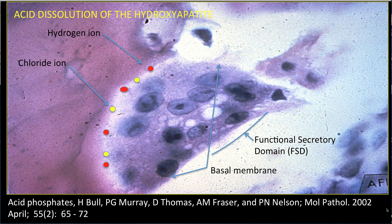Once the osteoclast starts resorbing bone, a fourth zone — a functional secretory domain — forms in the basal membrane, associated with the transport of material to the extracellular space. Mineral dissolution of bone occurs first, under the ruffled border, through the action of hydrochloric acid at a pH reported somewhere between 2 to 4.5. Cytoplasmic carbonic anhydrase 2 drives hydrogen ion formation, which is then driven across the ruffled border by the H+-ATPase pump.